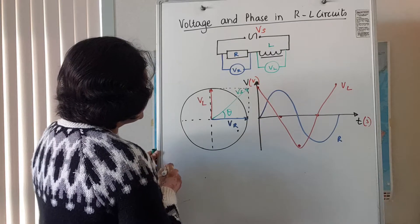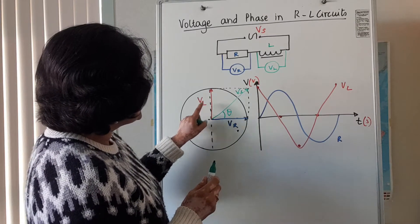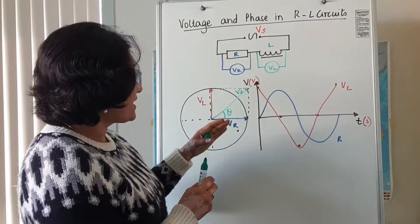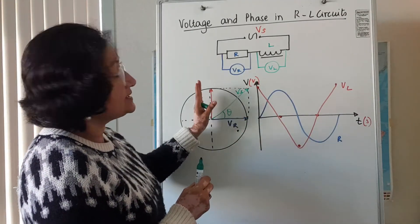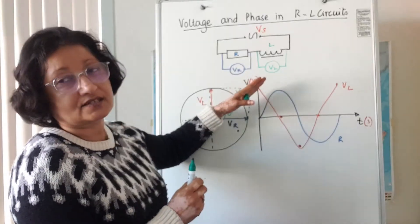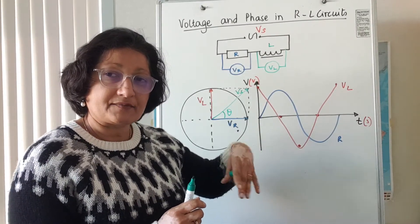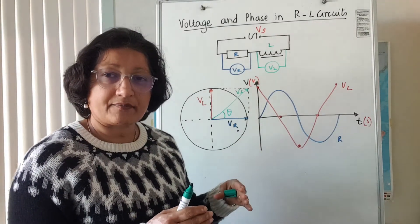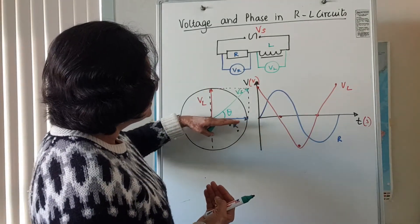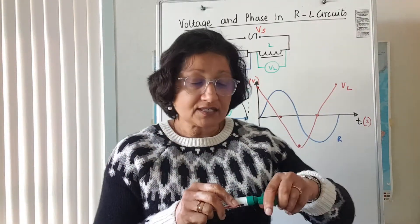The important thing to remember is that the voltage across the inductor leads the voltage across the resistor by 90 degrees. When you have a combination of a resistor and an inductor in an AC circuit, the supply voltage actually leads the resistor voltage. The other thing to remember is that the current through the circuit is always in phase with the resistor voltage.